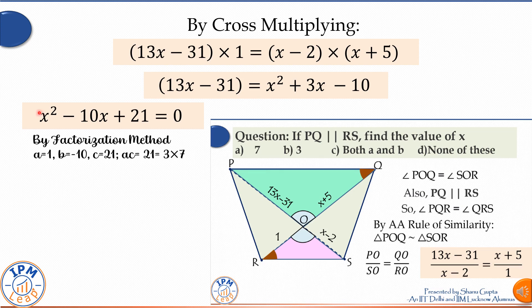21 is 7 times 3, so the middle term can be written as -7x - 3x. The two factors of the quadratic equation are (x - 3) and (x - 7).